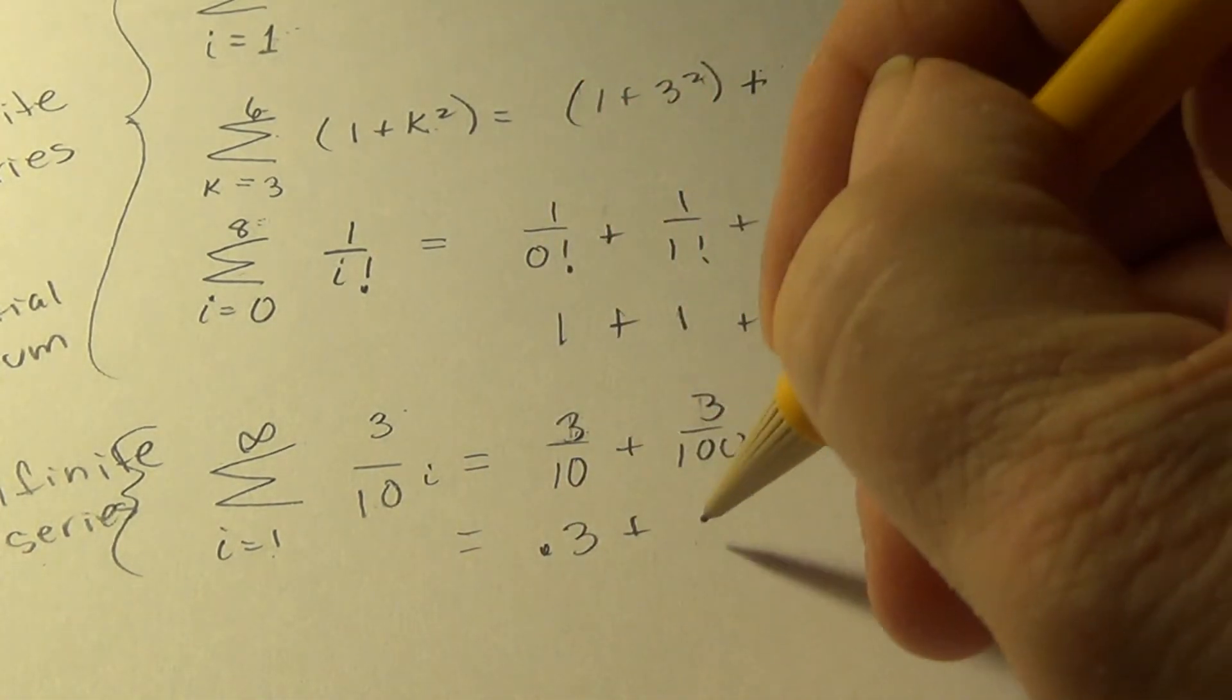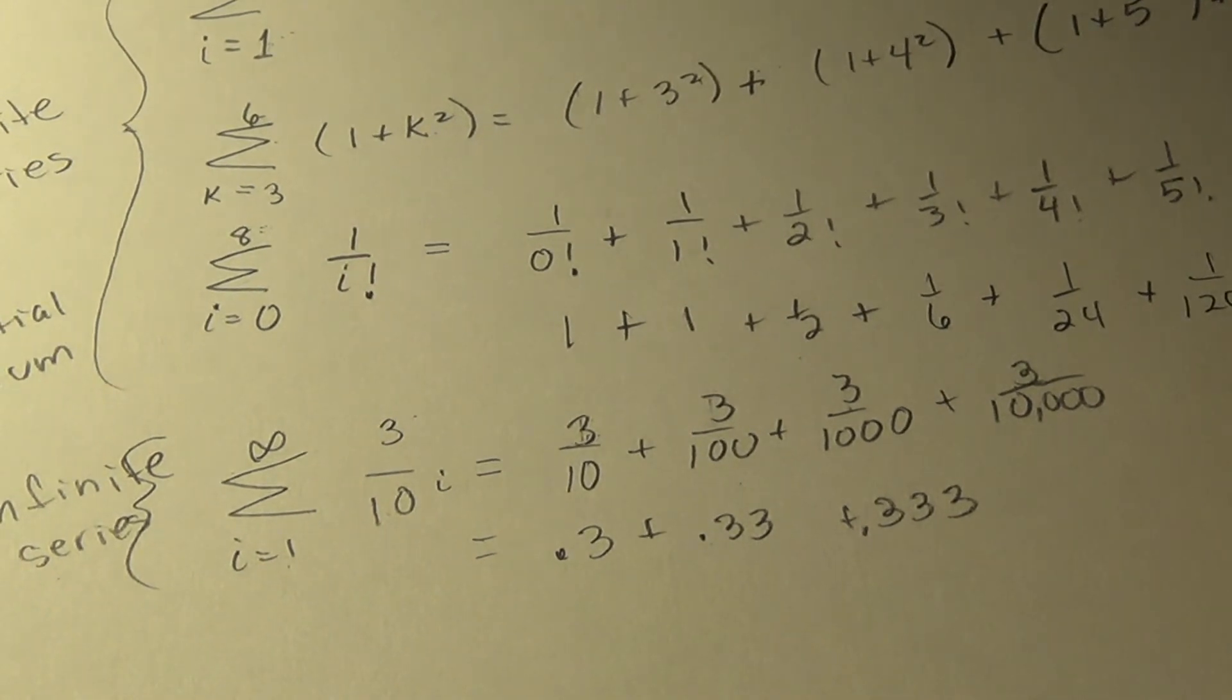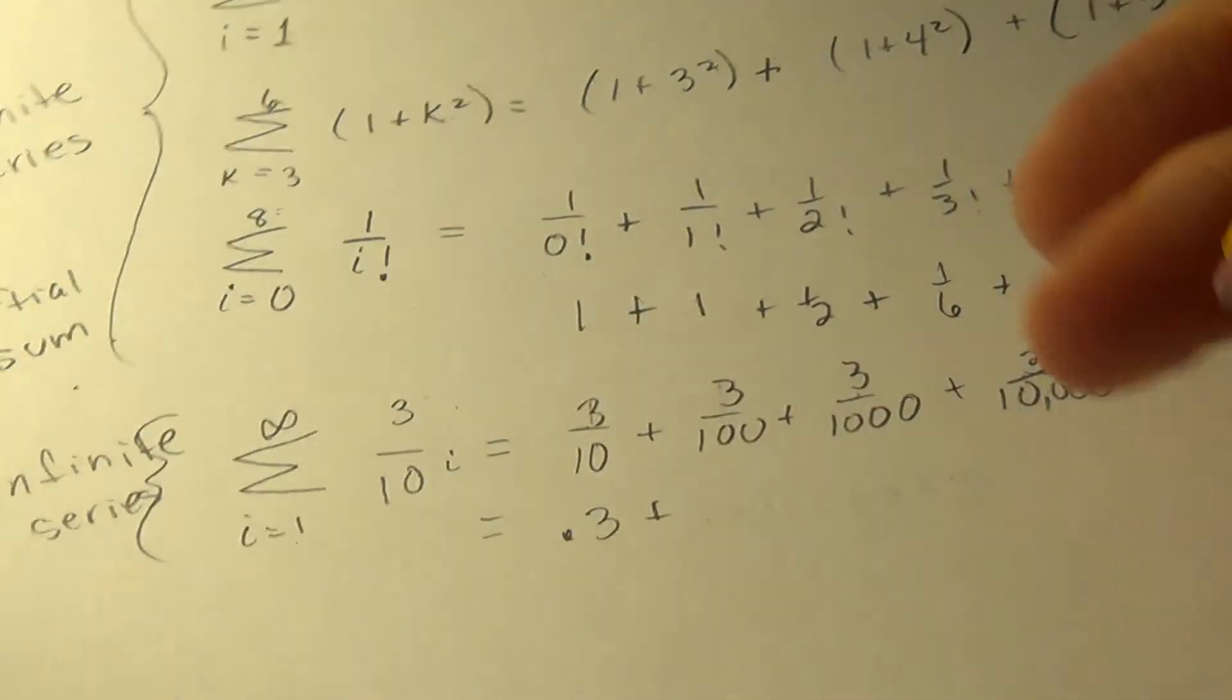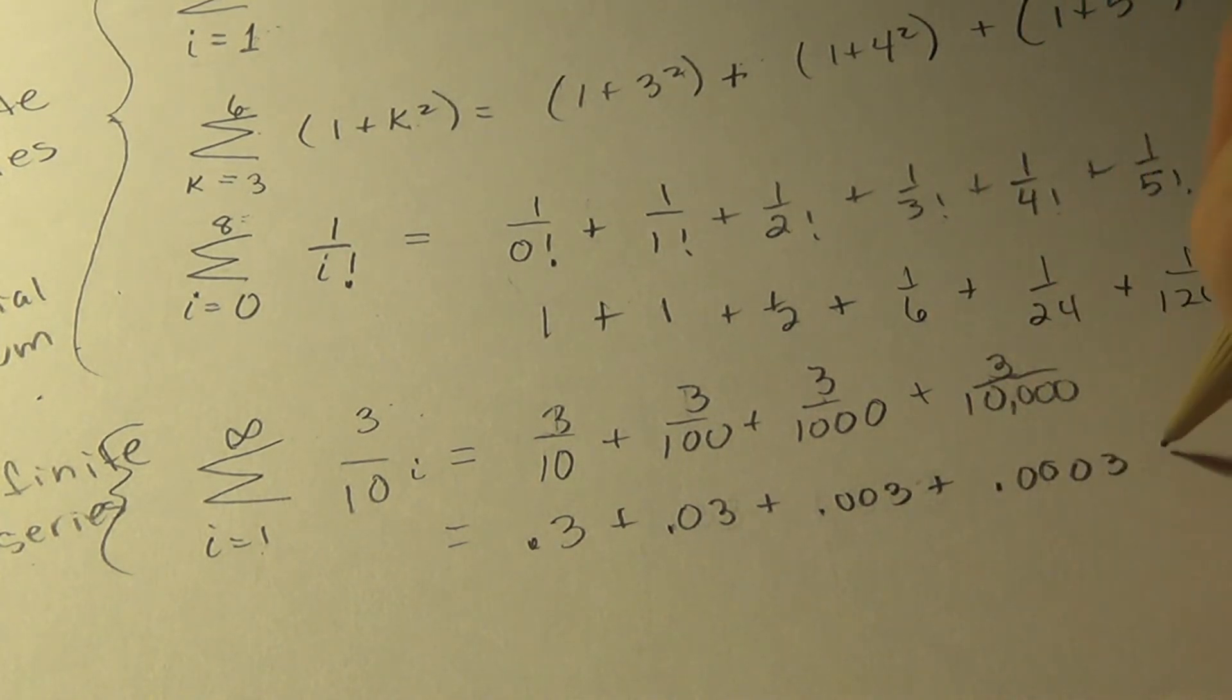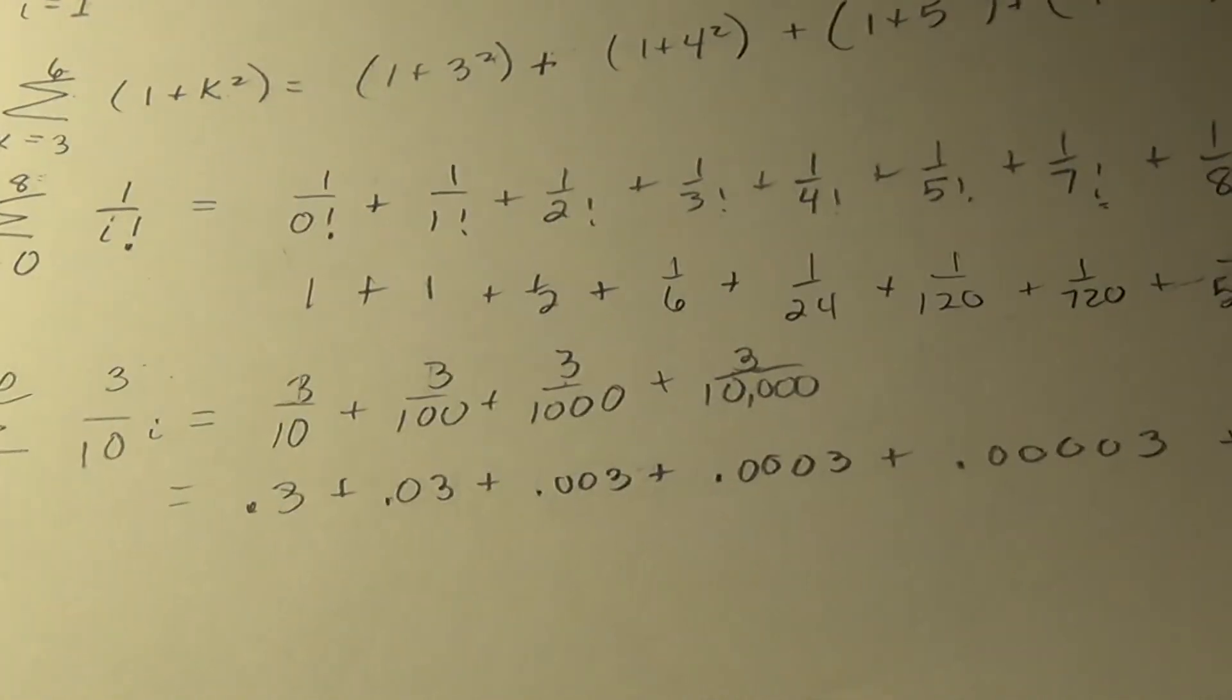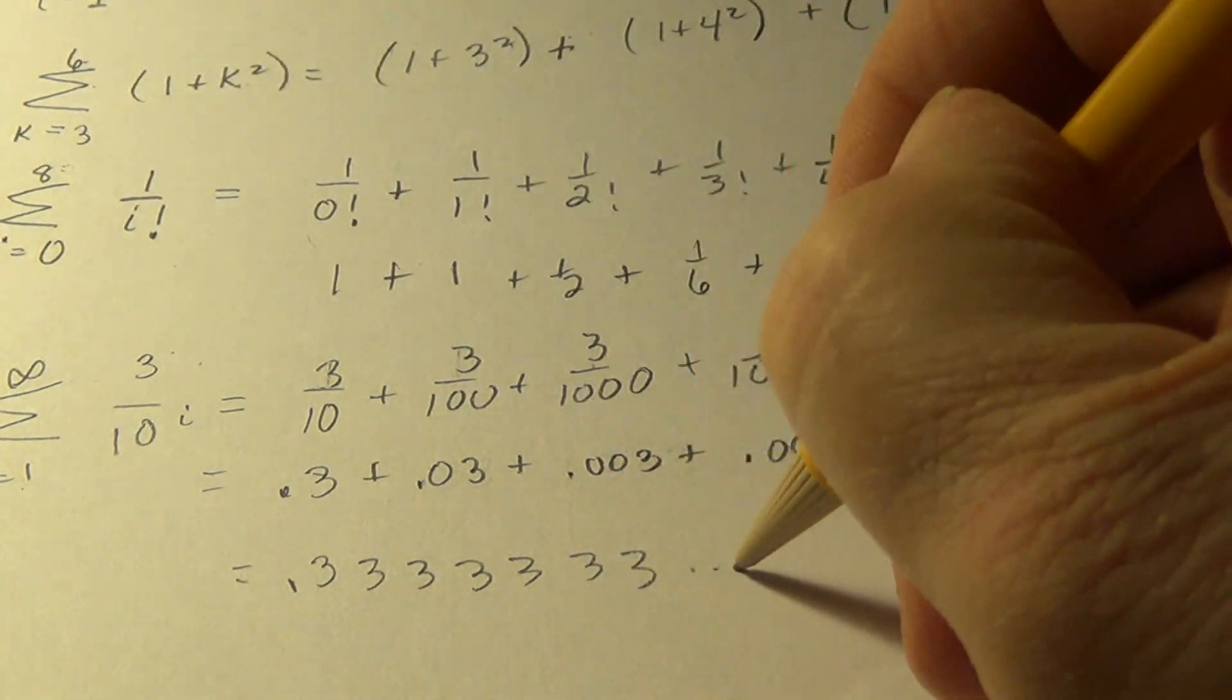So when we change that to a decimal, 3 tenths looks like this. 3 hundredths looks like this. 3 thousandths looks like this. And that's not true. I'm messing up on this one. Sorry. 3 hundredths looks like this. 3 thousandths looks like this. This is more like it. 3 ten thousandths looks like this. So you can see we're going to continue on such a pattern. And if we were to add these all up, if we were going to add them all up, we would get 0.3333333 and so on, which is...